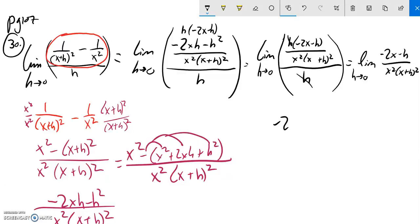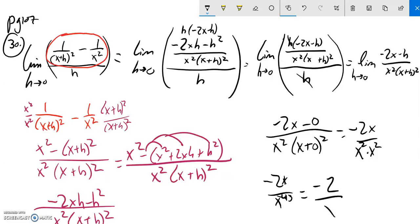So I have negative 2 times x—I don't know what x is, that's all right—minus 0 over x squared times (x + 0) squared. Which is negative 2x over x squared times x squared. Which is negative 2x over x to the 4th. One of these x's cancels one of those x's. So it's negative 2 over x cubed.